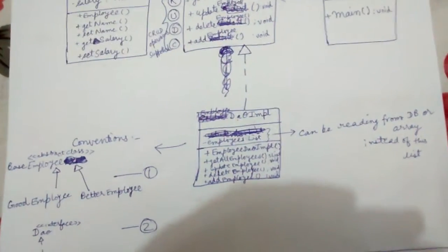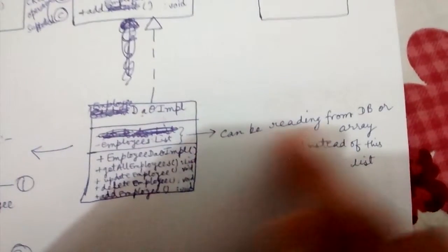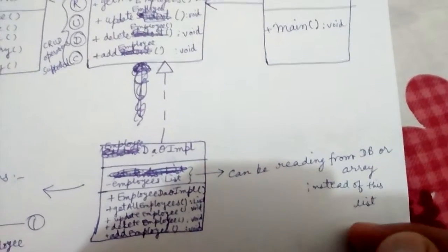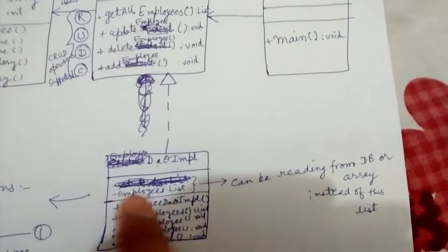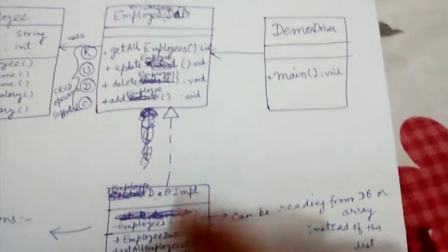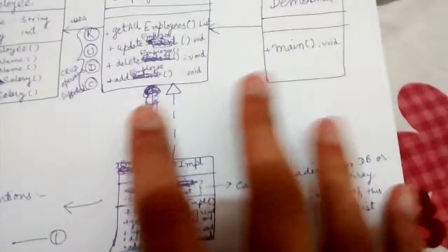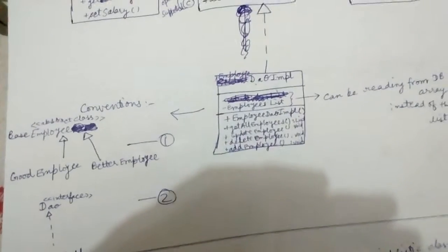Here is the actual implementation of the EmployeeDAO class. The DAO interface can have multiple implementations — it can be reading from a database, an array, or a linked list. Here we are storing the data in a linked list, so this is one implementation. Another implementation may be reading from a database rather than an array.